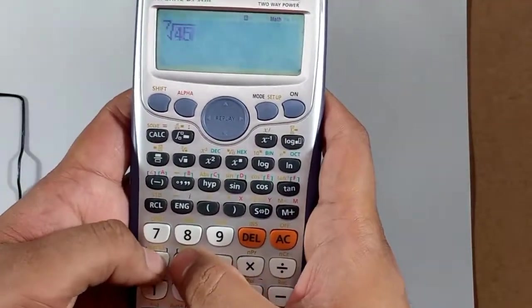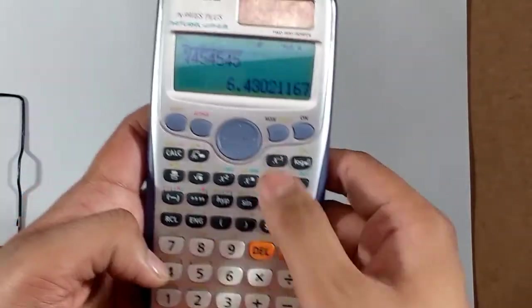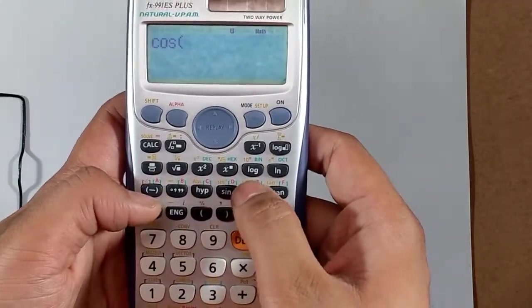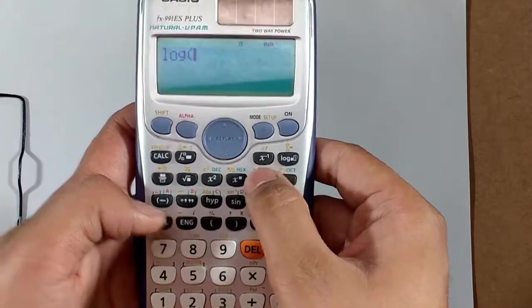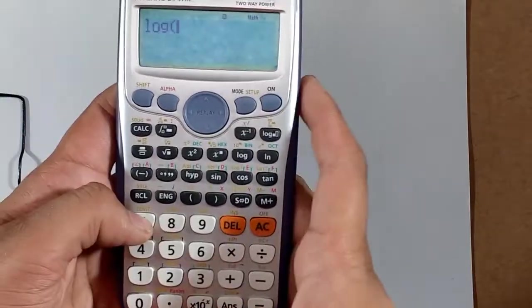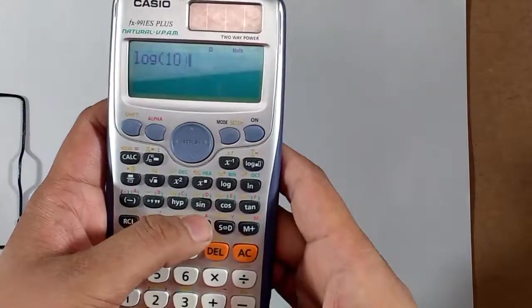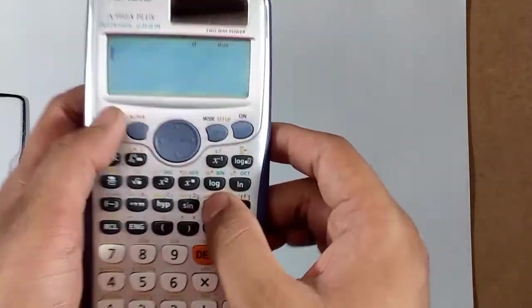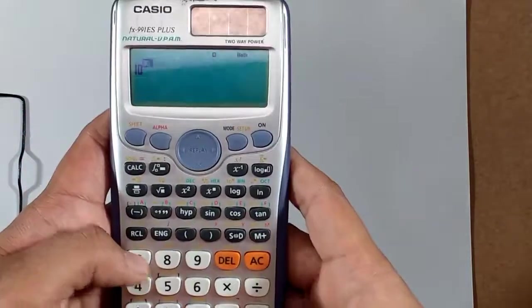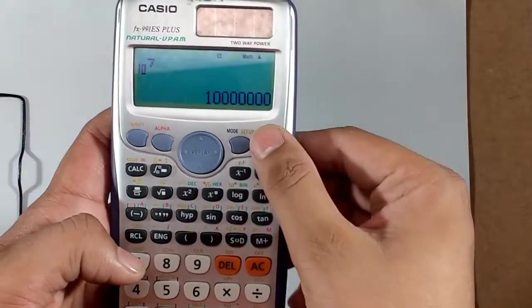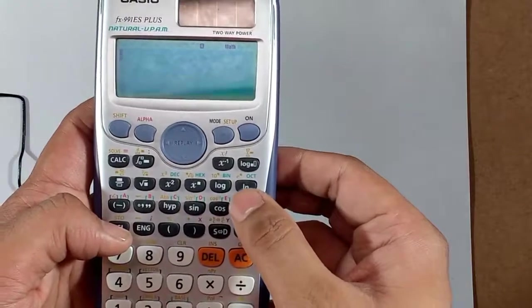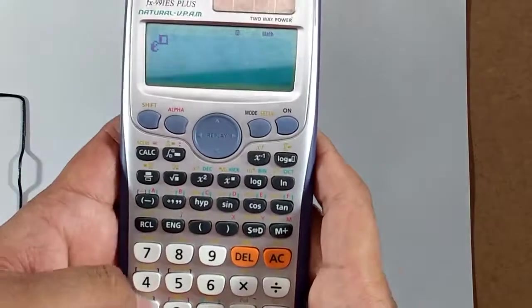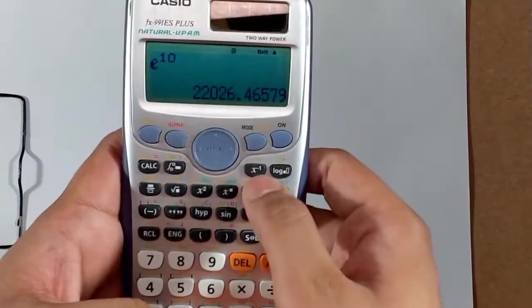It's the log function. Log button, log of 10. Let us input 10, it should give you one, and that's correct. Similarly, 10 to the power something like seven, and here it is. It's a natural log button, and there is shift to the e, e to power. Let us input 10, and here is your answer.